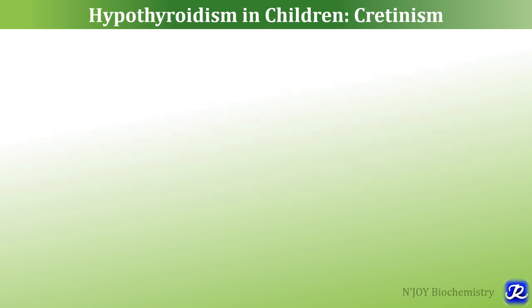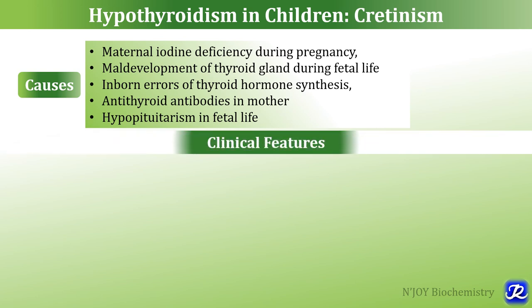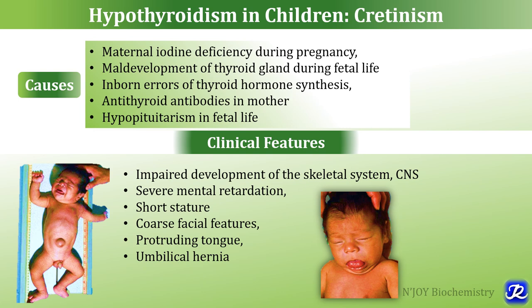Hypothyroidism in children results in cretinism. Causes include maternal iodine deficiency during pregnancy, mild development of the thyroid gland during fetal life, inborn errors of thyroid hormone synthesis, antithyroid antibodies present in the mother, or hypothyroidism during fetal life. Clinical features of cretinism are impaired development of the skeletal system and central nervous system, severe mental retardation, short stature, coarse facial features, protruding tongue, and umbilical hernia.